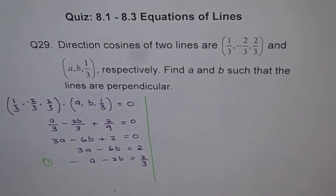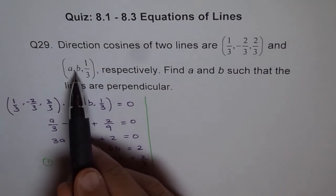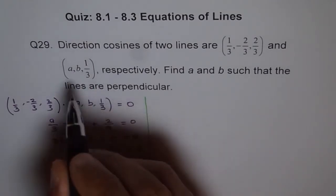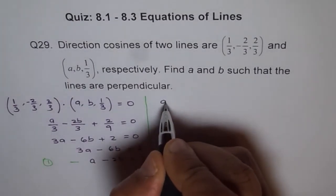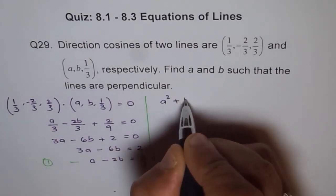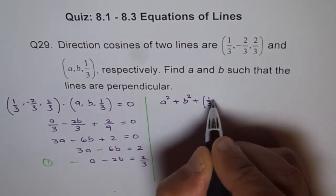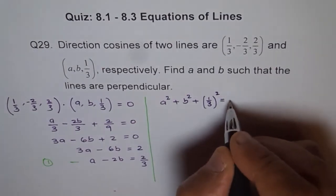Another property of direction cosines is that the sum of squares equals 1, and that gives us a second equation. To solve for two variables we always need two equations, otherwise it resolves to parametric. So we use: A² + B² + (1/3)² = 1.